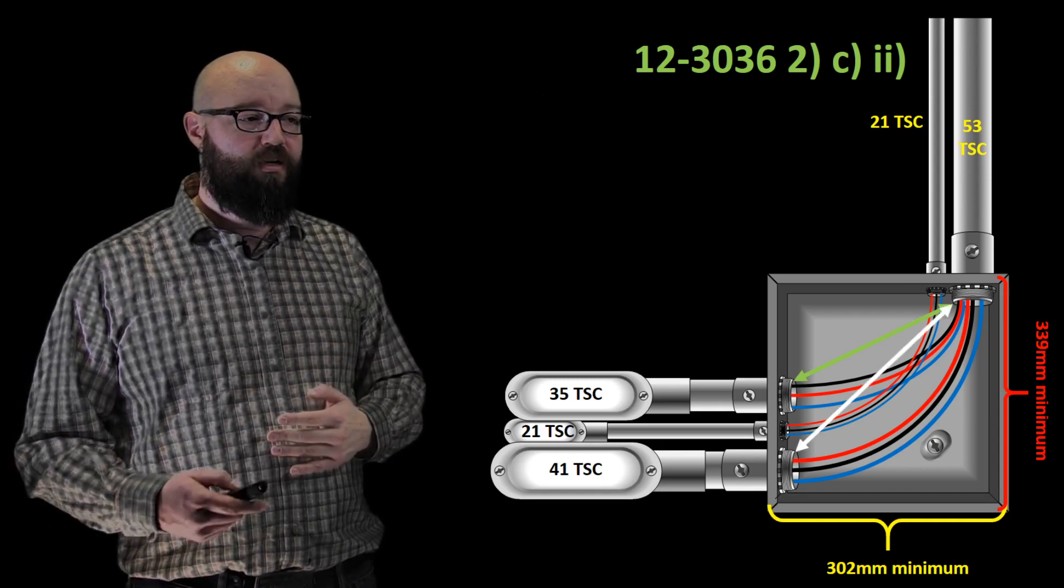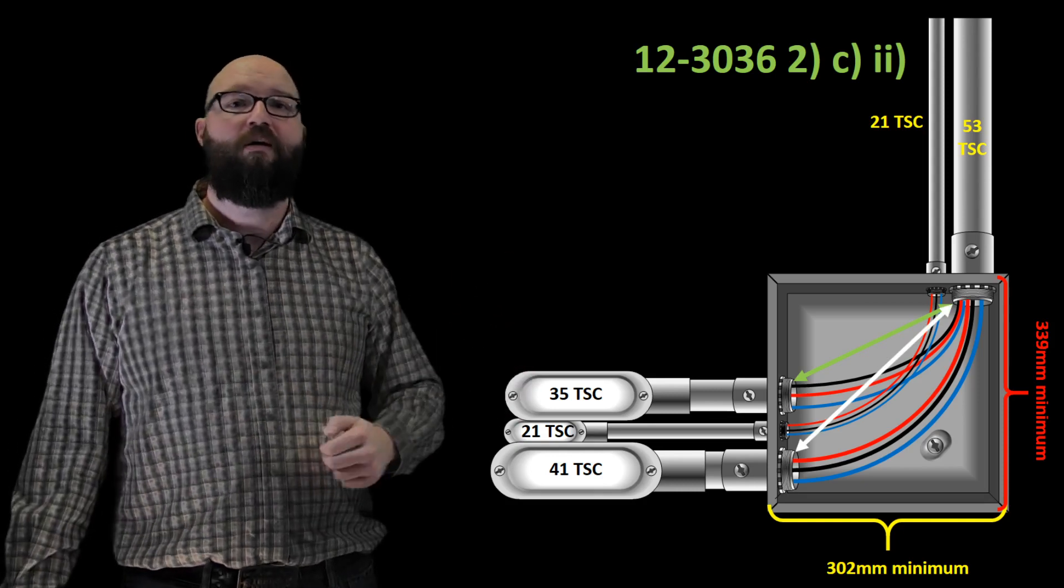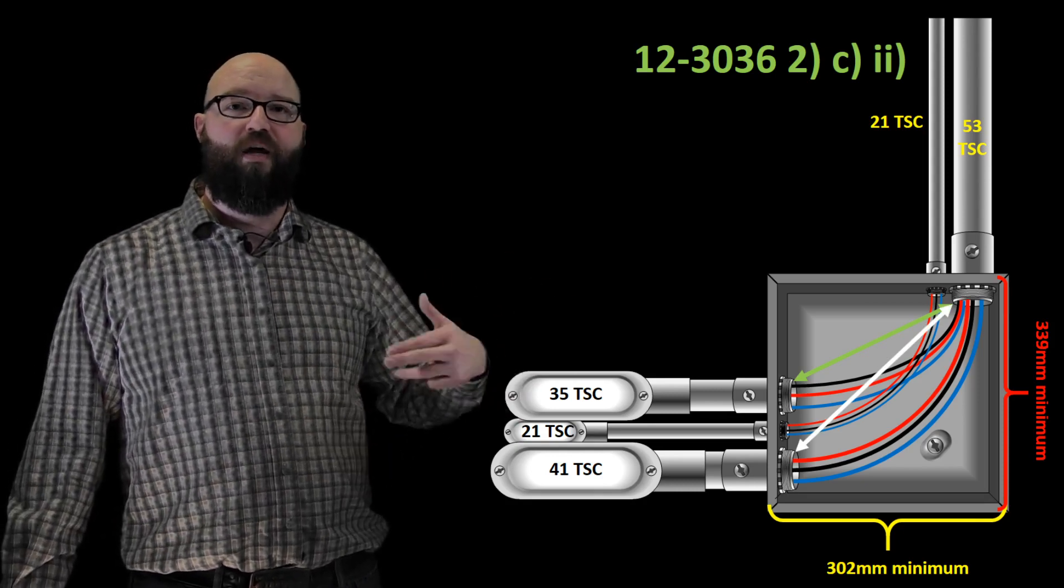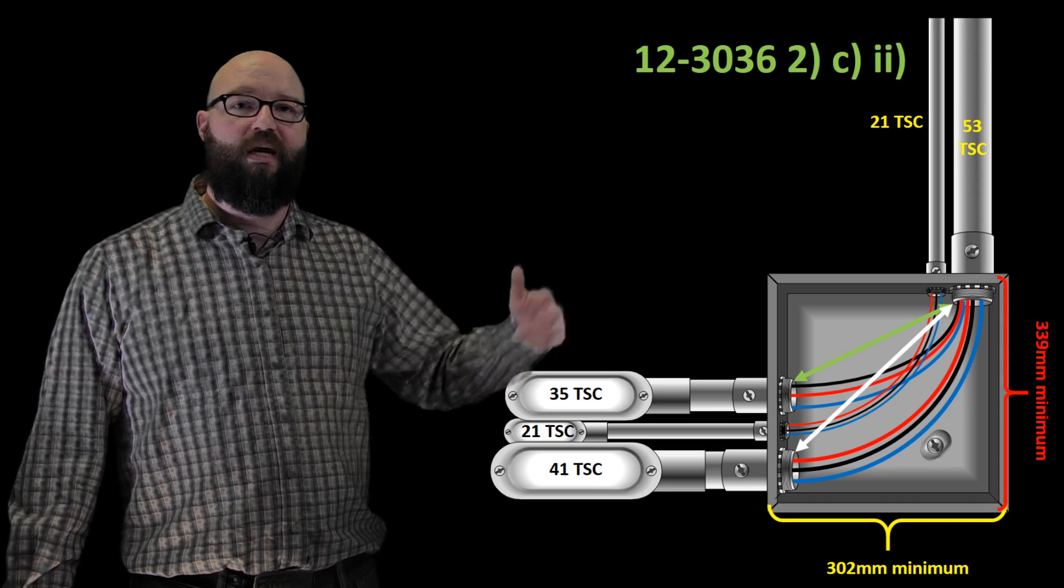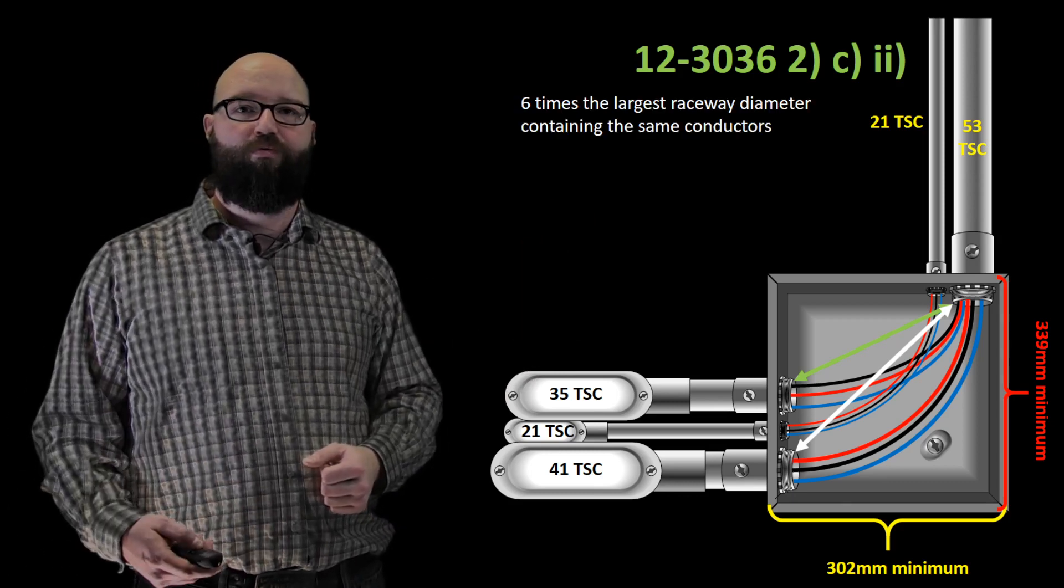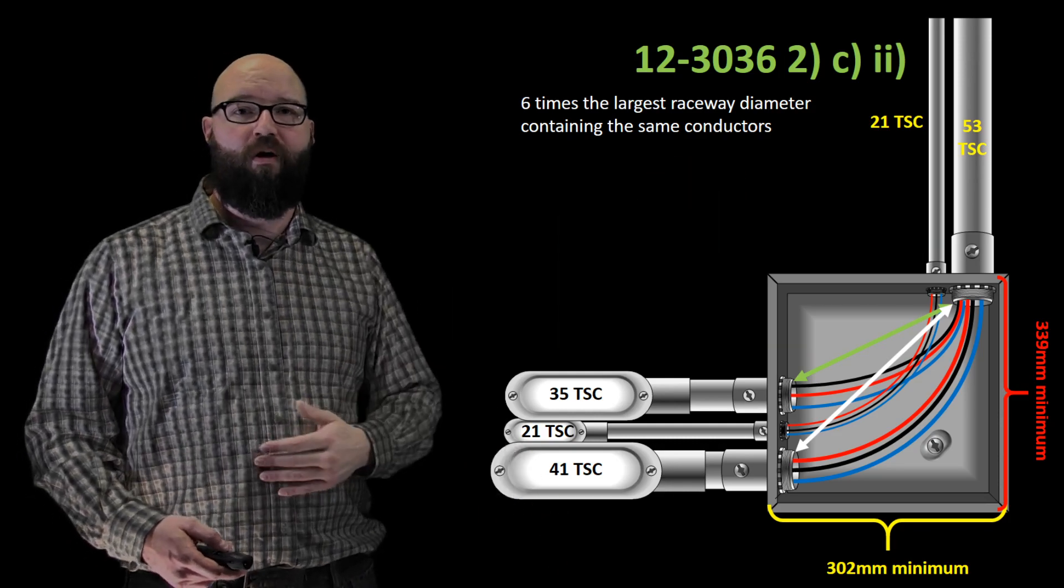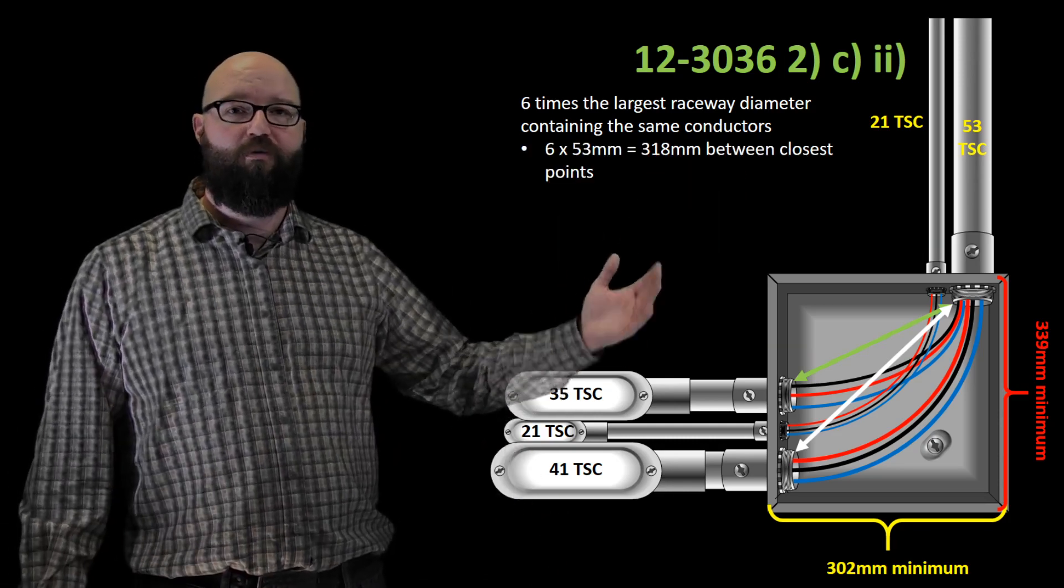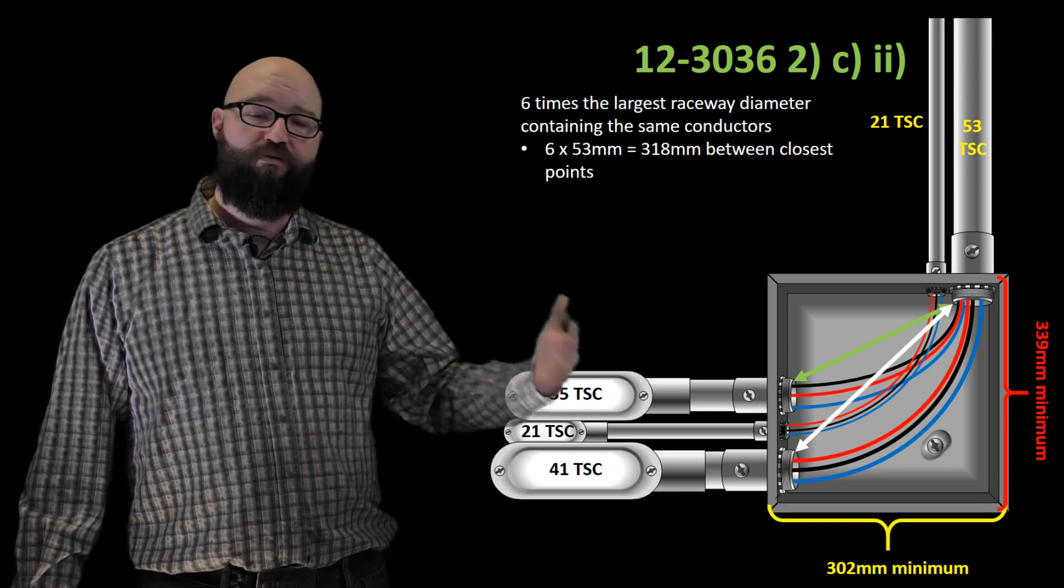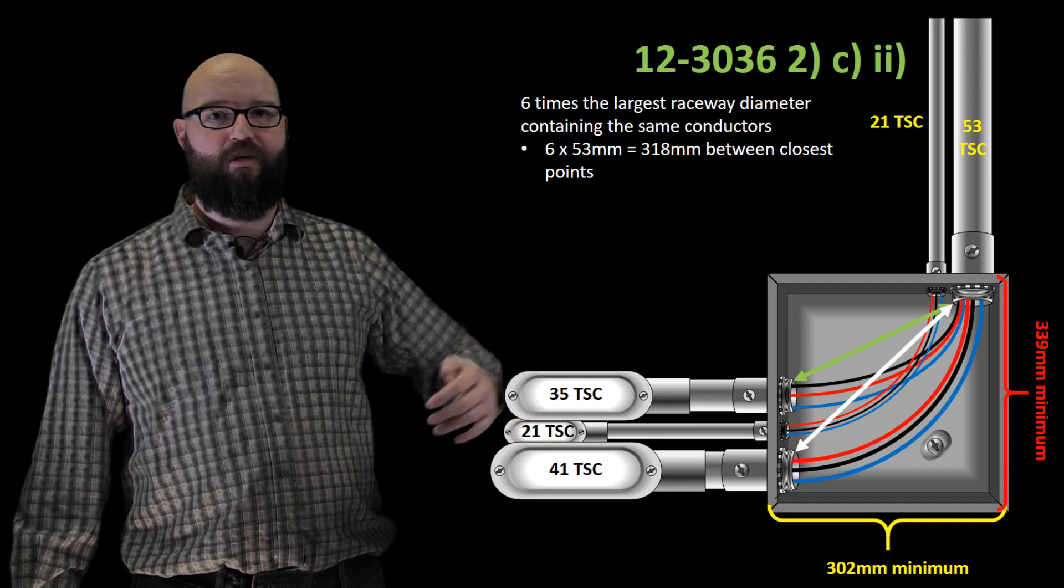And if we look at the next conduit as well, same thing, the minimum distance between those two points would again be six times the largest diameter of the raceway containing those two cables. So again, it would be the exact same. We would take that 53 trade size conduit. We have 53 and 41 that we're comparing. 53 trade size conduit times 6 gives us again the 318 millimeter distance minimum between those from the inside edges.